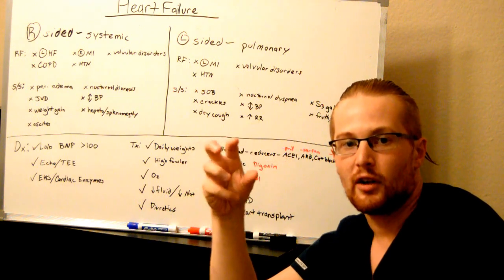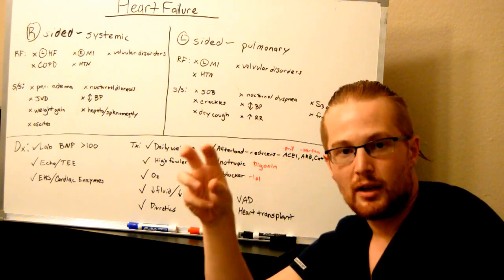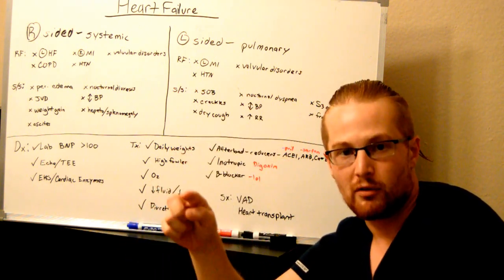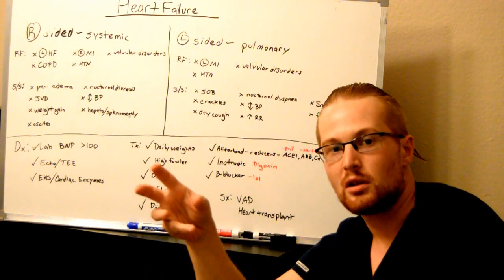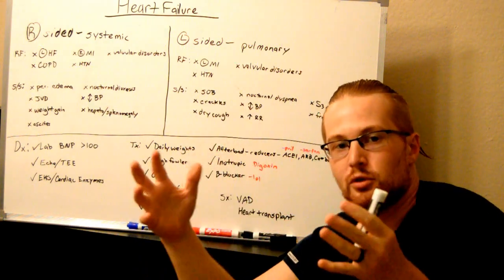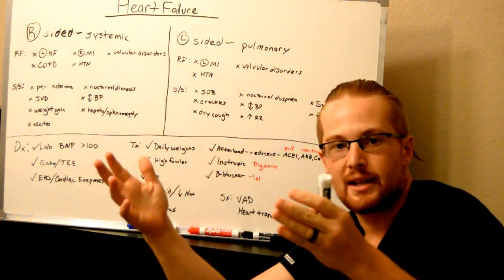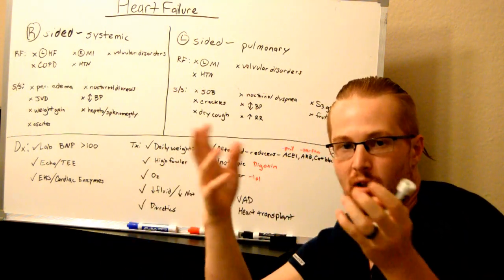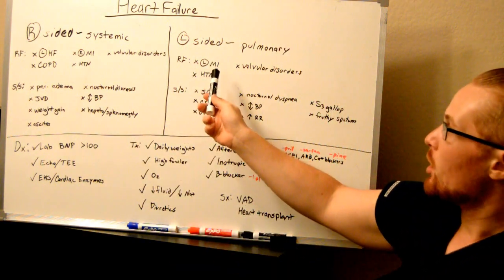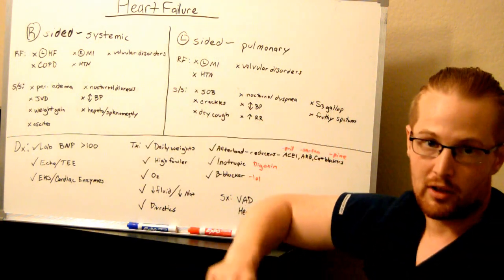If you have left side of the heart failure, you can't get rid of the blood in the left side of the heart so it backs up to what's right before the left side, which is the lungs. However, the lungs aren't able to hold very much swelling so then that backs up into the right side of the heart and then the rest of the body. So left side of the heart failure can lead to right side of the heart failure.